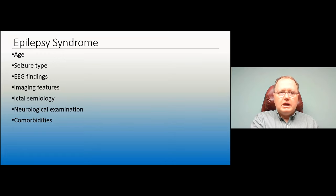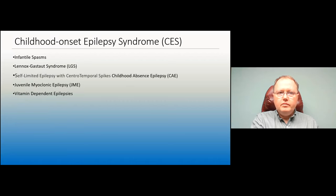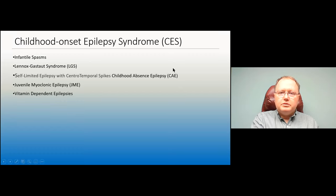When configuring an epilepsy syndrome, many factors contribute: the patient's age, seizure types, EEG appearance, imaging, seizure semiology, neurological examination, and comorbidities. I'll go through several common syndromes seen frequently in clinic and the hospital: infantile spasms, Lennox-Gastaut syndrome, self-limited epilepsy with central temporal spikes, childhood absence seizures, juvenile myoclonic epilepsy, and pyridoxine-dependent epilepsy.